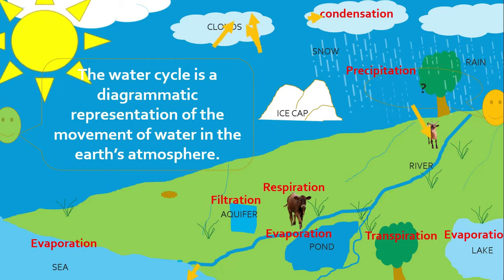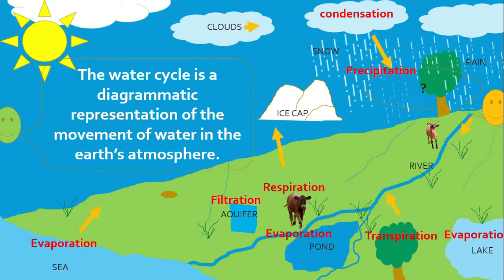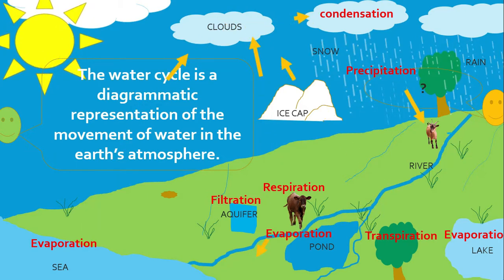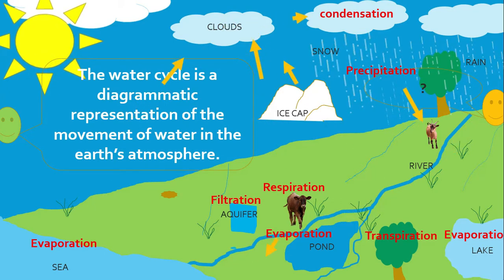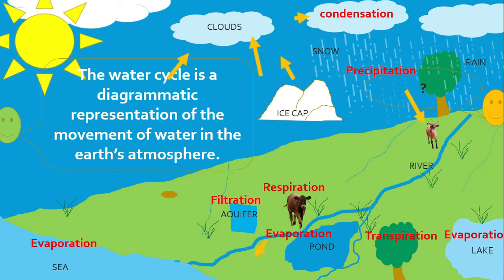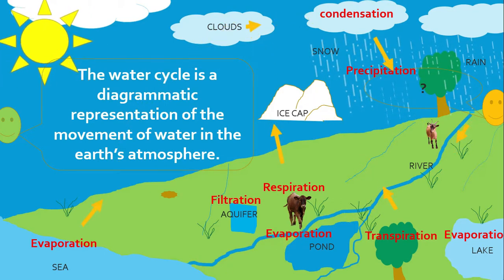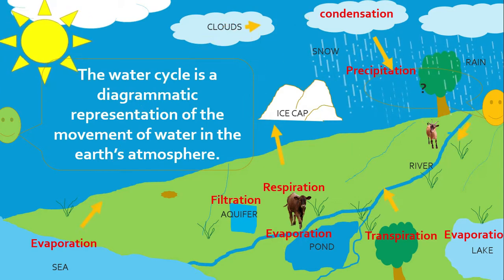Animals drink the water and return it to the atmosphere by respiration. Water on the surface, like lakes, ponds, and rivers, and seas return to the sky by evaporation.